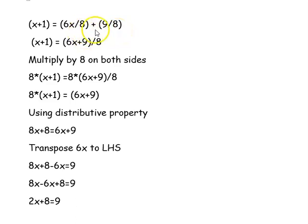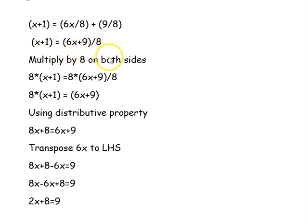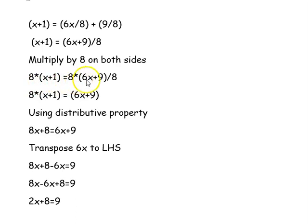The denominator 8 is common on the right-hand side, so taking it out and adding the numerators gives x + 1 = (6x + 9)/8. Now we multiply both sides by 8 to remove the denominator: 8(x + 1) = 8 times (6x + 9)/8.